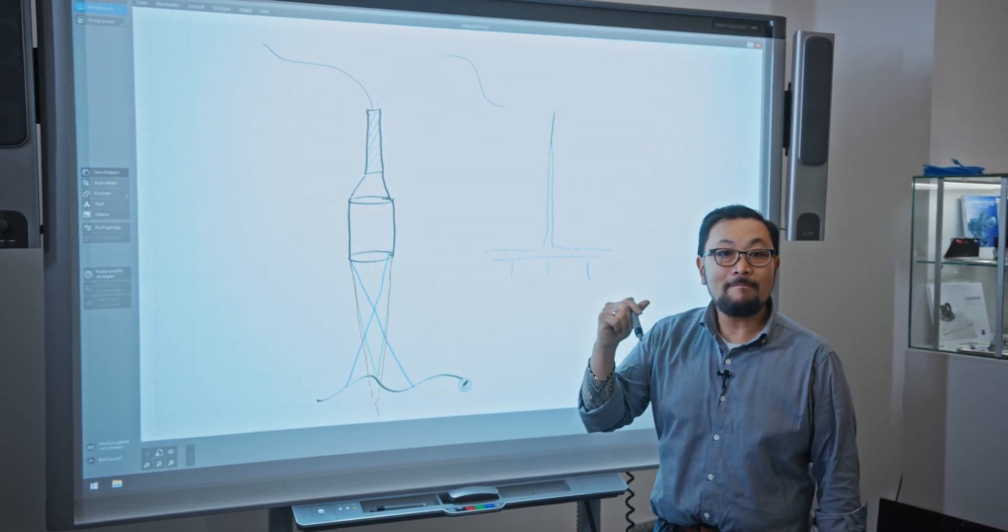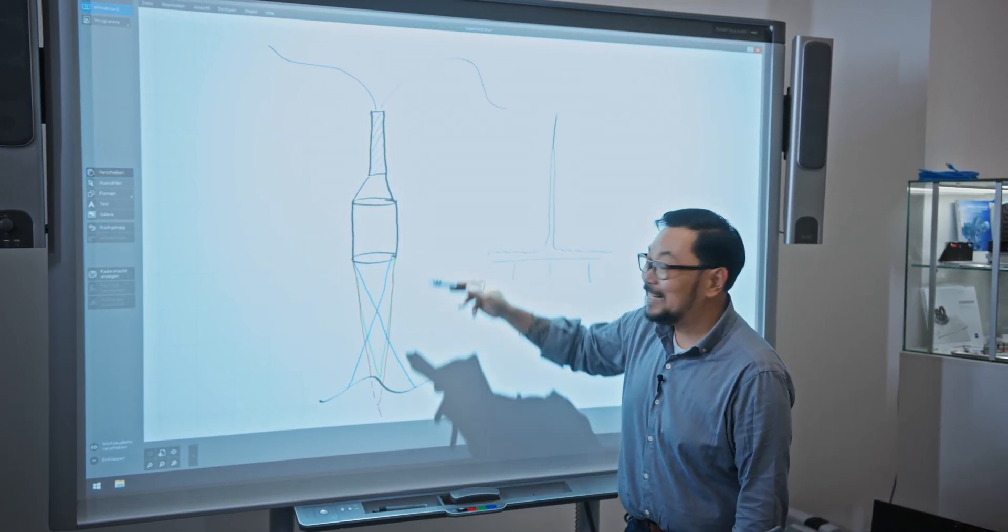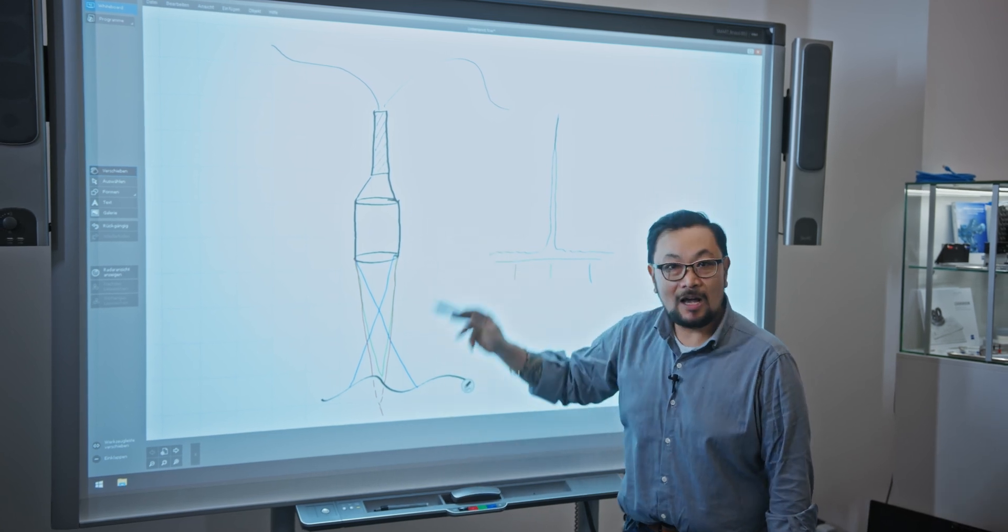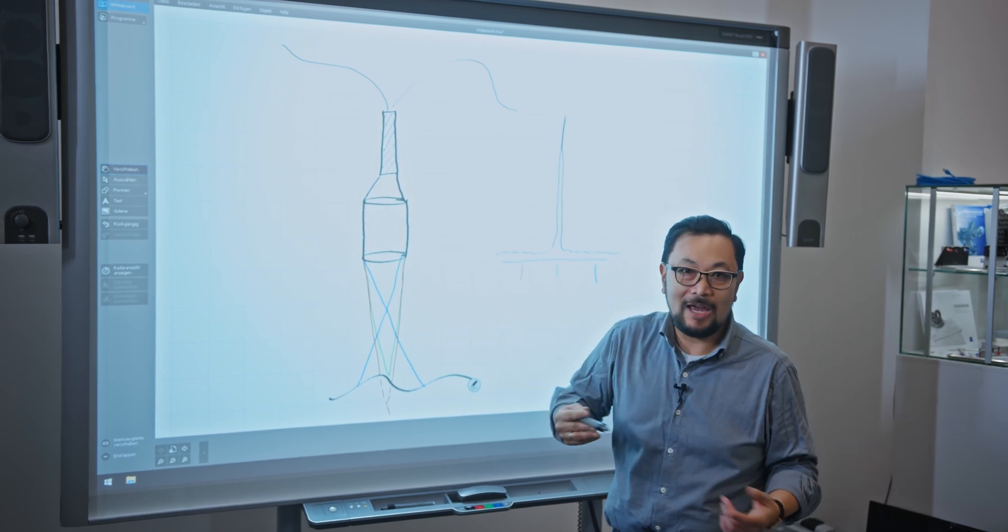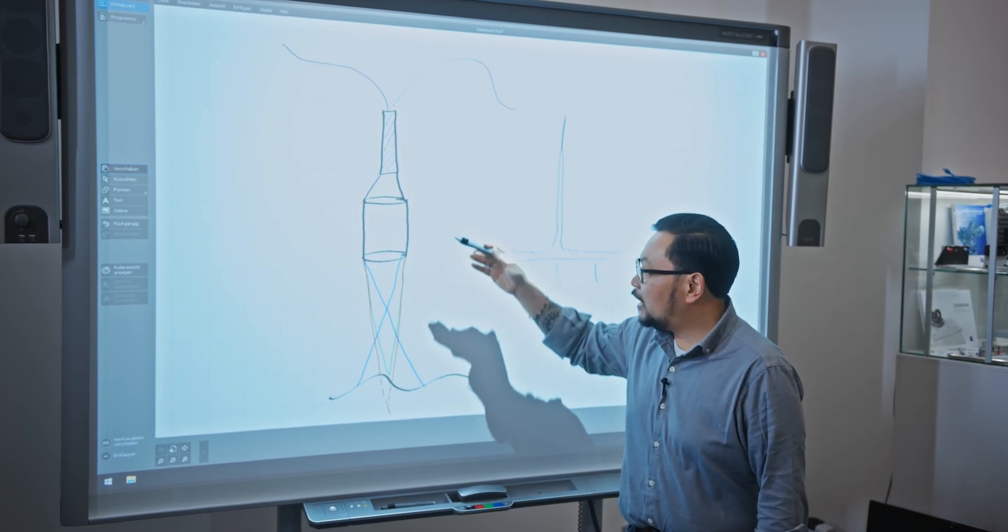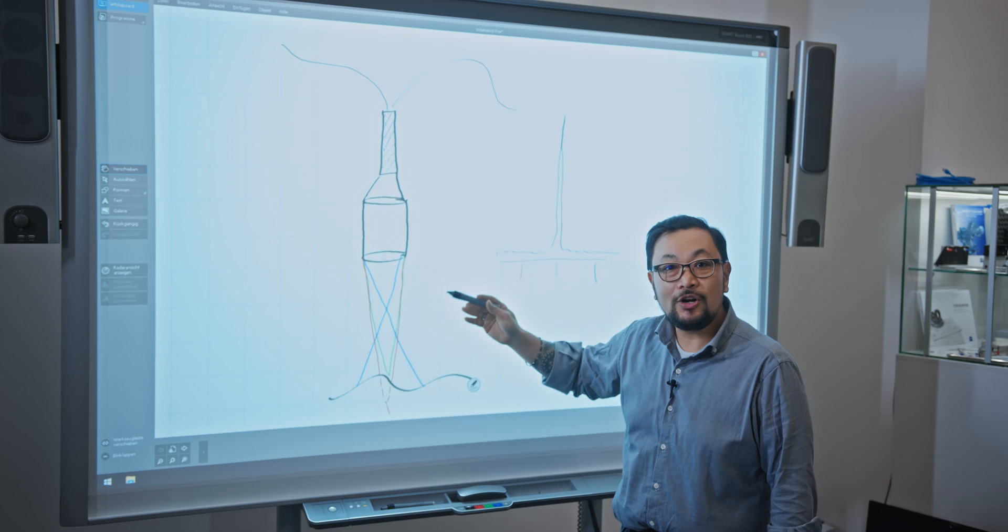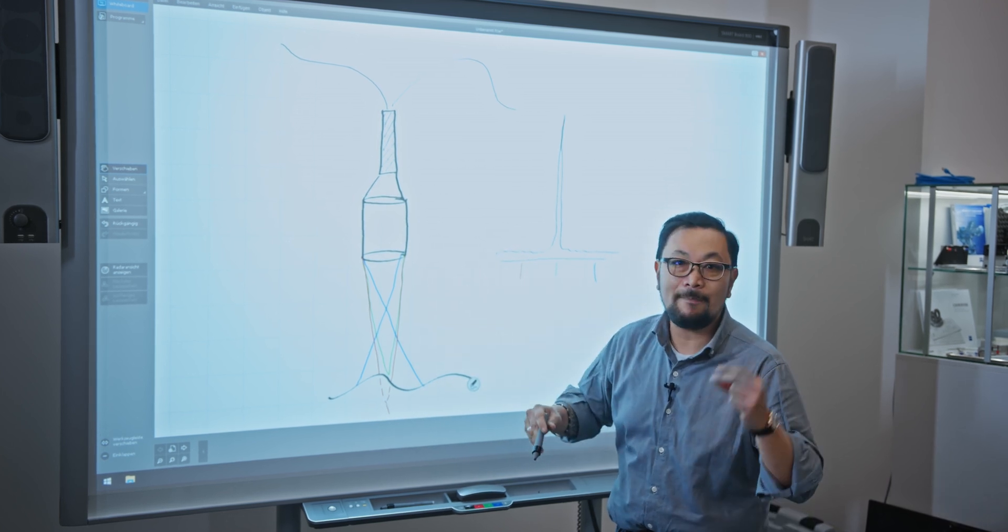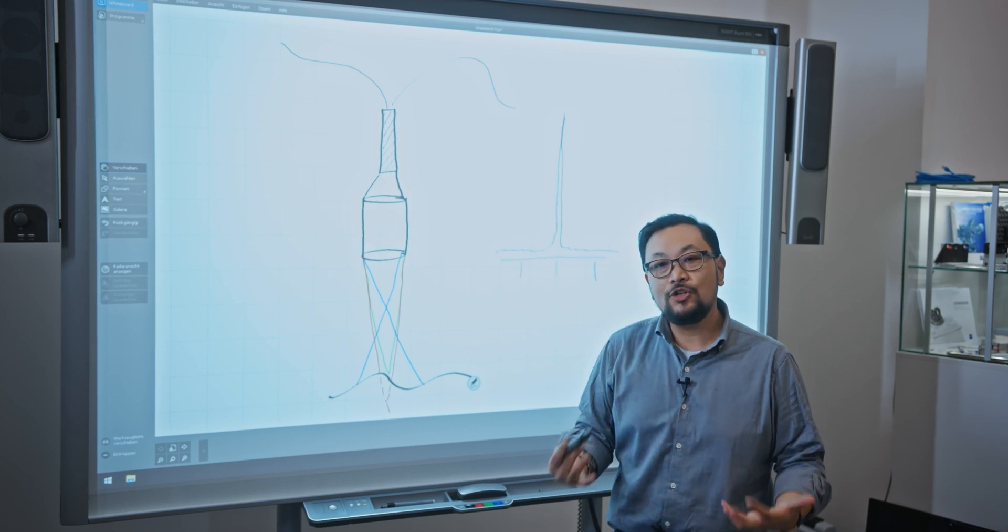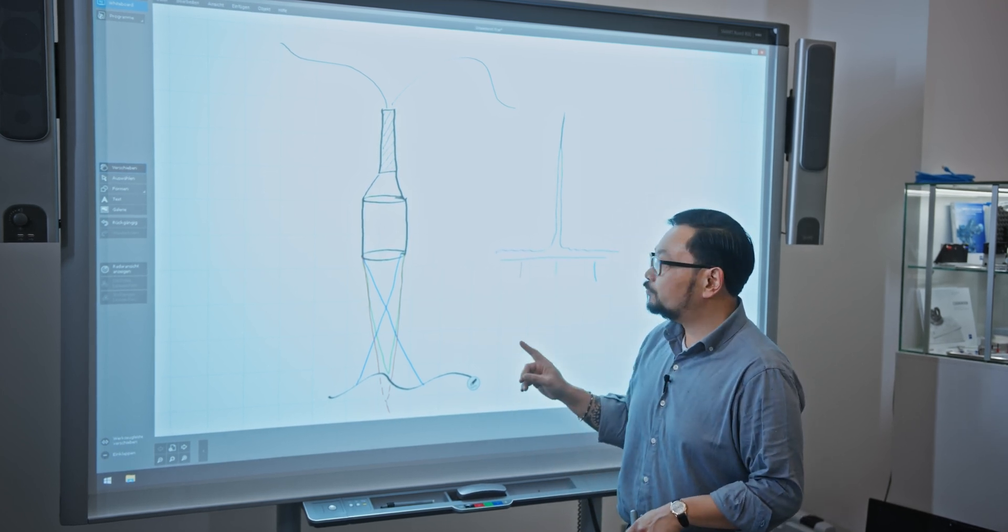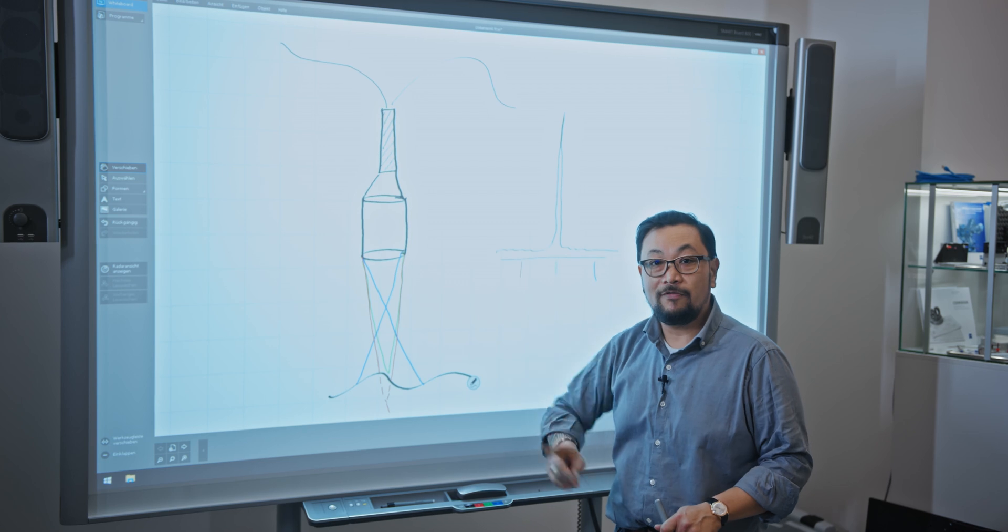This method of discerning distance using colors is different from other ways of doing it, like time of flight, which takes time to do. Because we only return a color back, it can happen almost instantaneously. And this speed allows us the opportunity to do things that we couldn't do before.